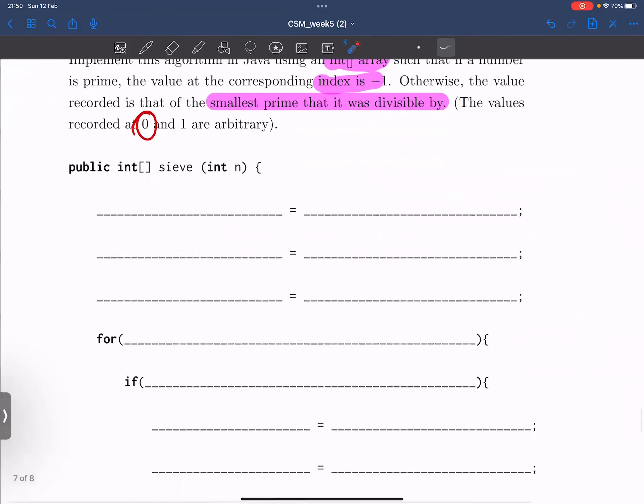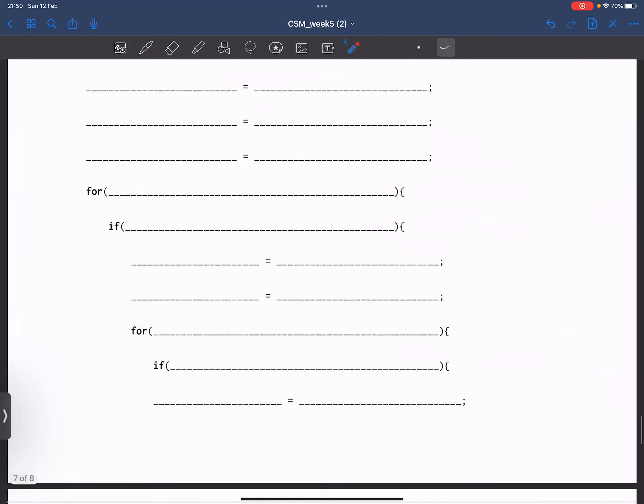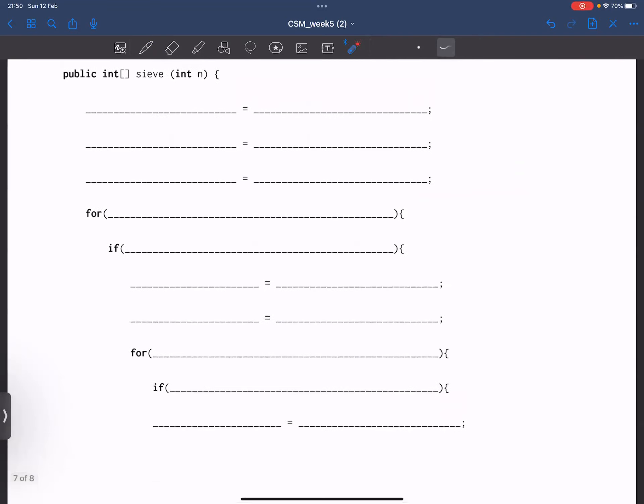And here is the problem itself. As we can see, there are quite a few lines that we need to fill out. So let's start from the first. The very first line is going to be the creation of the integer array results that we're going to fill in value by value. And of course, it's going to be of the size n, because we need to consider every value from 0 to n minus 1 included.